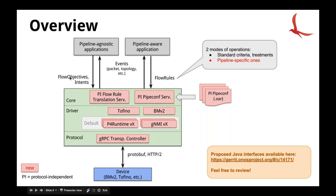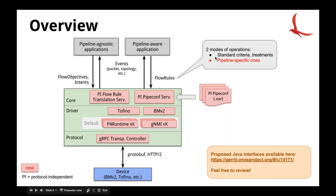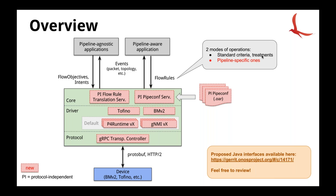Two types of applications are distinguished: pipeline-agnostic applications — existing applications using flow objectives and intents — and pipeline-aware applications that know how the pipeline is structured. For pipeline-aware applications, flow rules have two modes: using standard criteria and treatments (existing Ethernet or IP criterion types, forwarding instructions), or using pipeline-specific criteria and treatments for non-standard match actions. There is already a patch on Gerrit with all the interfaces shown in this picture.